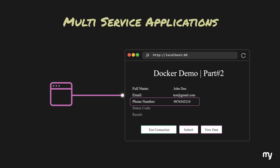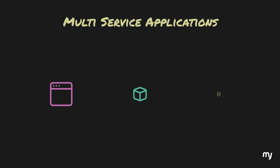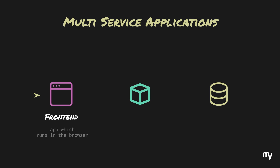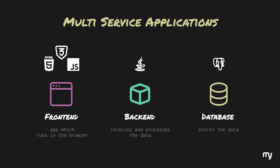Imagine a basic website with a form that allows you to create a user with details like name, email, and phone number. The app displays a form, validates the details, and sends them to another system which processes and stores the data in a database. We have three main services: the frontend based on HTML, CSS, and JavaScript; the backend based on Java which receives and processes data; and finally a PostgreSQL database.